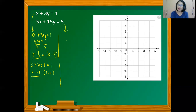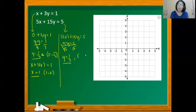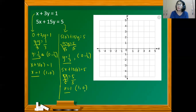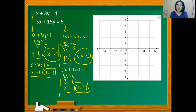Working on the second equation, letting x equal 0: 5(0) plus 15y equals 5, so 15y equals 5. Dividing both sides by 15, y equals one-third — the y-intercept, giving (0, ⅓). Letting y equal 0: 5x plus 0 equals 5, so 5x equals 5, giving x equals 1 — the x-intercept, giving point (1, 0). Comparing the intercepts of both equations, they are equal, so we consider the system as consistent and dependent.